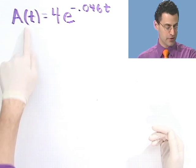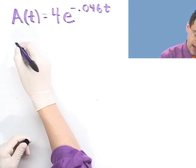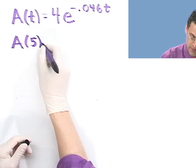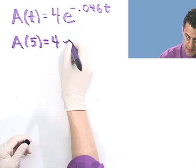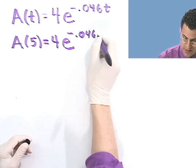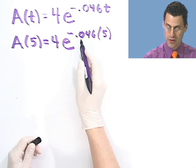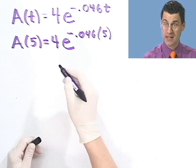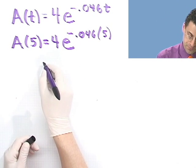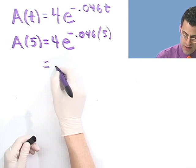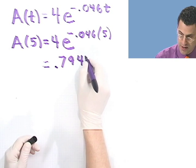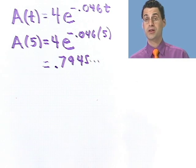What is the amount of sodium-24 that remains in our patient's body after 5 hours? Well, I'm asking for a of 5, and that's pretty easy — it's just 4 times e to the minus 0.046 times 5. You can plug that into a calculator: minus 0.046, multiply it by 5, take e to that power, then multiply by 4. And what you get is numerically 0.7945 micrograms.